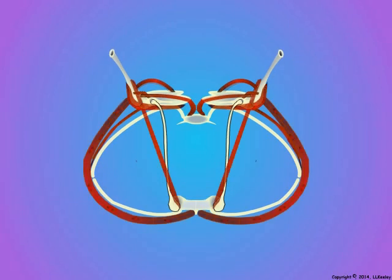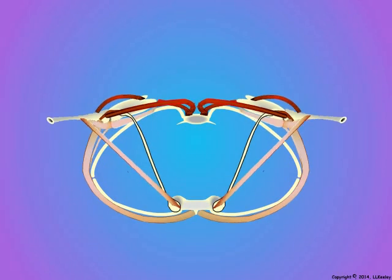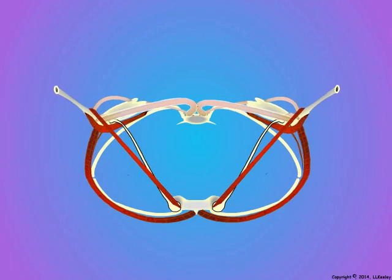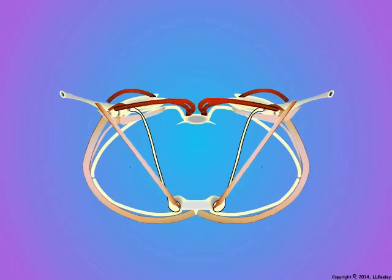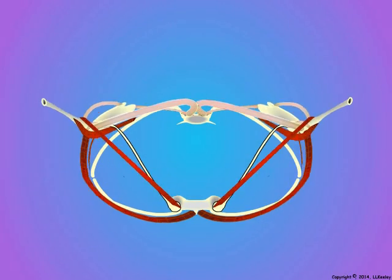Of these eight flight muscles in bats, only the pectoralis attaches to the sternum, whereas in birds both of the flight muscles attach to the sternum. We will now show the entire bat wing beat with all muscles visible.